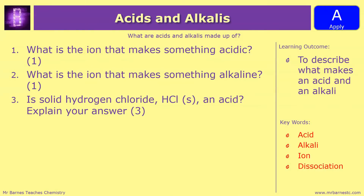We've got three questions to have a go at. Number one: what is the ion that makes something acidic? Number two: what is the ion that makes something alkaline? And number three: is solid hydrogen chloride, HCl, an acid? Explain your answer. To answer question three you'll need to think back to the ionic bonding topic and the state of hydrogen chloride. Pause the video now, have a go, and then when you're ready see how well you've done.